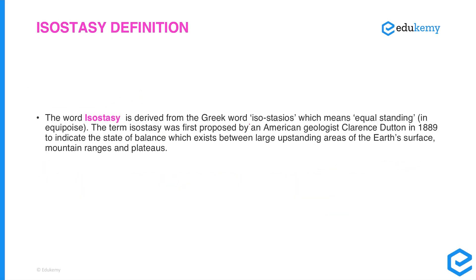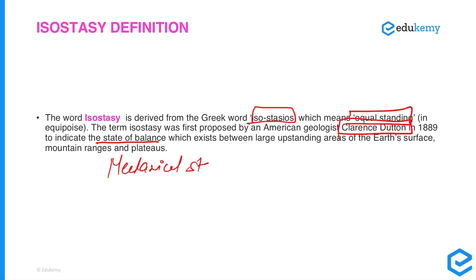In simple terms, isostasy means 'isostasios,' which means equal standing. The term isostasy was first proposed by American scientist Clarence Dutton in 1889, to indicate the state of balance between existing landforms on the earth's surface. It is a natural principle that determines the mechanical stability of landforms, and it determines how material on the earth's surface as well as the interior is distributed.